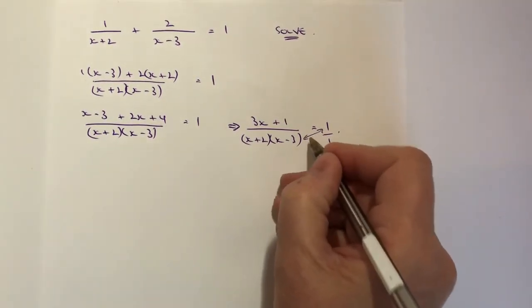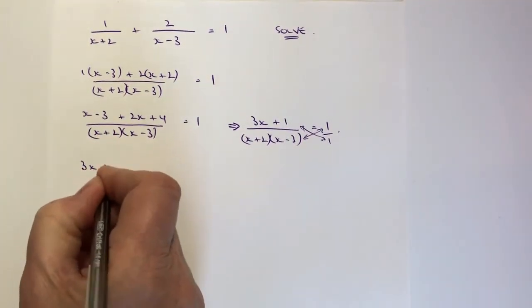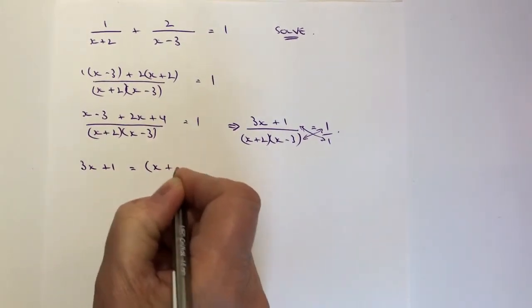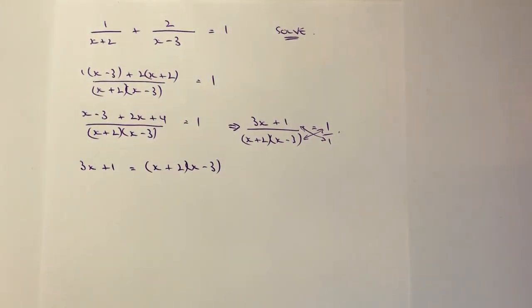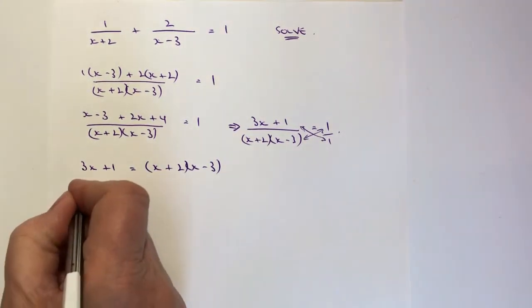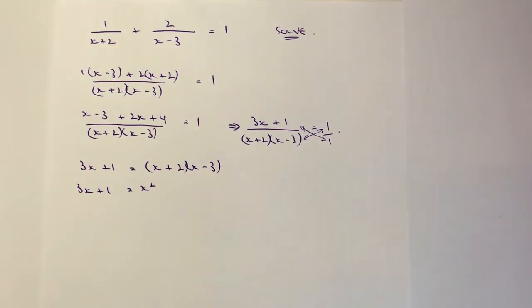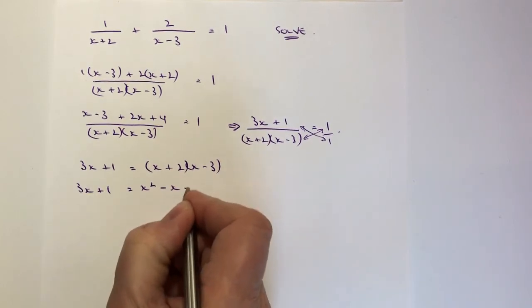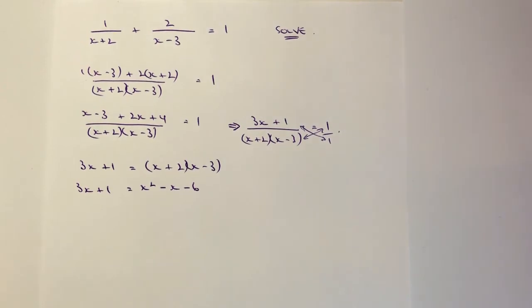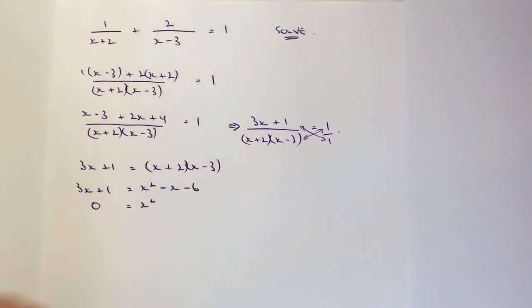If you can imagine that one is the same as saying one over one and what effectively I'm doing is I'm cross multiplying. So I could write this particular term as 3x plus 1 equals x plus 2 multiplied by x minus 3 if I wanted to and that makes my life a little bit easier because now I can just multiply out these brackets and what I'm going to end up with at the end of this is a quadratic equation because x times x is x squared and you'll recognize that as a quadratic. And then I'm going to end up with minus 3x plus 2x is minus x and then minus 6.